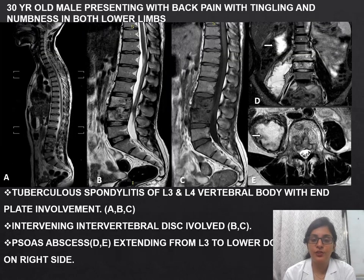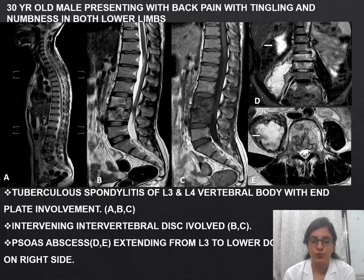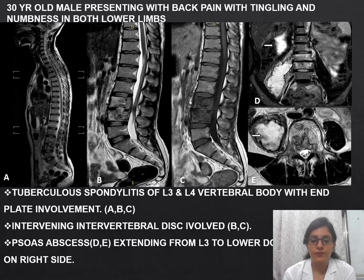Next patient: a 30-year-old male, presenting with back pain, tingling and numbness in both lower limbs. MRI shows tuberculosis spondylitis of L3 and L4 vertebral bodies with end plate involvement. The disc is also involved, and there is a psoas abscess from L3 extending downward on the right side.